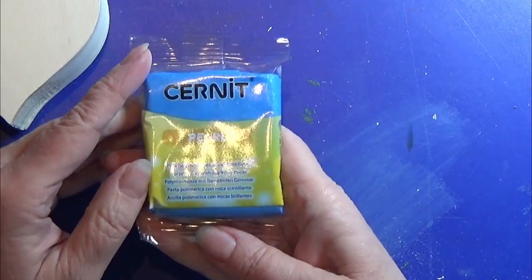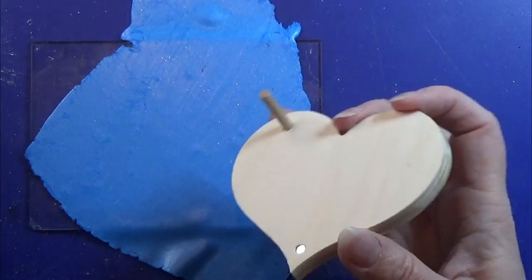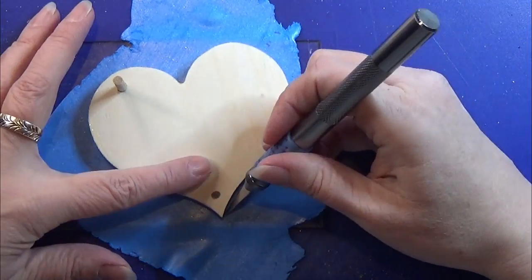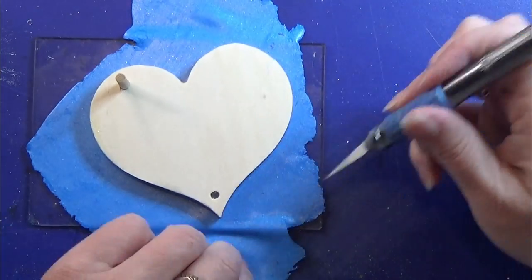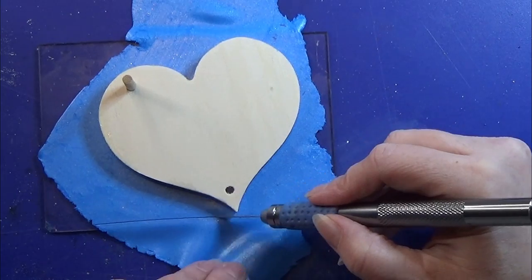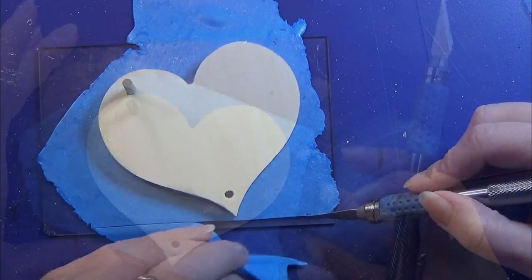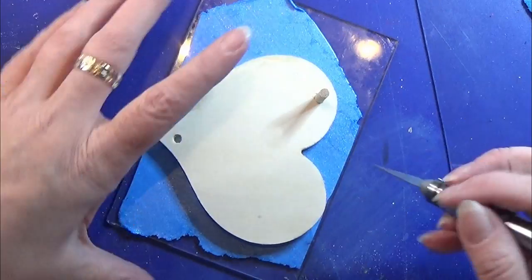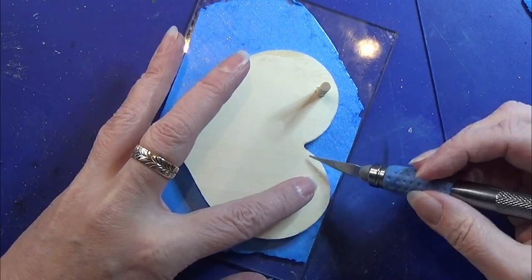I am using this blue polymer clay and I am rolling it out on my pasta machine. I think it was a setting 5 that I used for that, so it's not that thick but it's not too thin either. I'm just cutting around this heart so that I have the heart shape lying on the plate here.